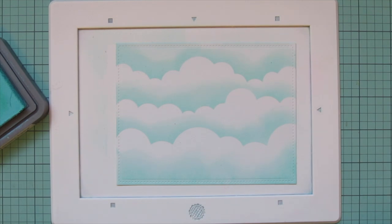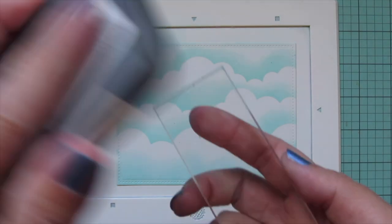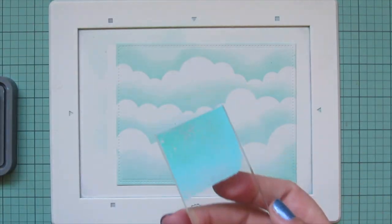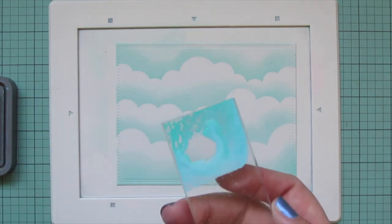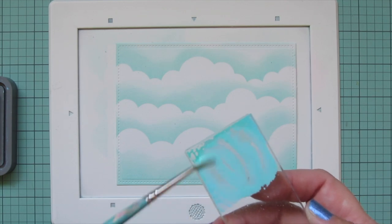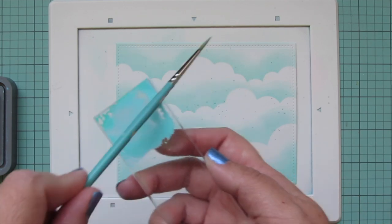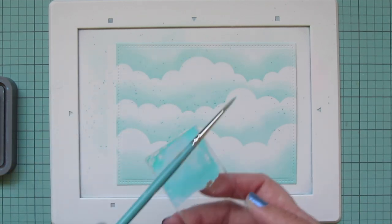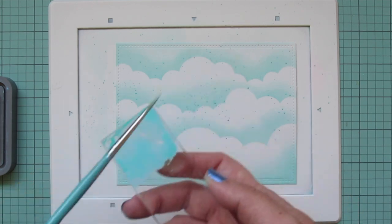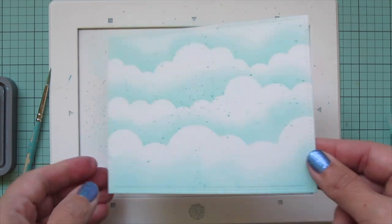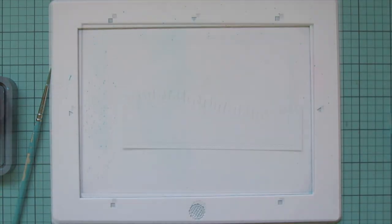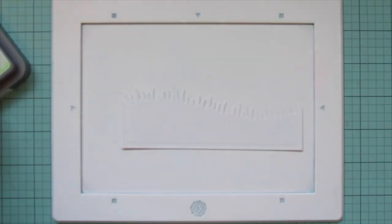I'm going to press some of that ink onto an acrylic block and add a little spritz of water to it so I can mix that up, make it more fluid. Then I will flick that all over the background with that paintbrush, just tapping it on the block so I get nice small little dots. Then I will set that aside to dry.